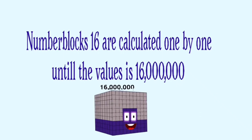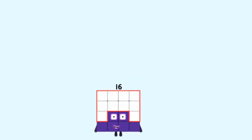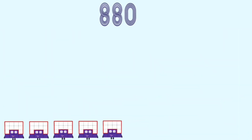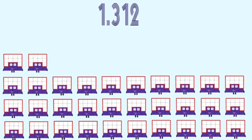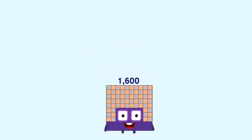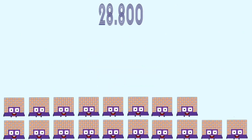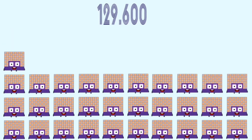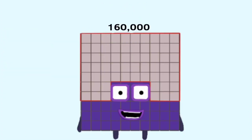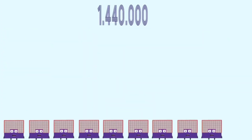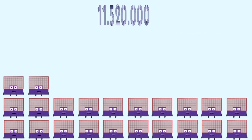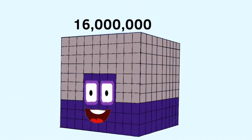Number blocks 16 are calculated one by one until the value is 16 million. Values shown: 1,600, then 160,000, then 16,000,000.